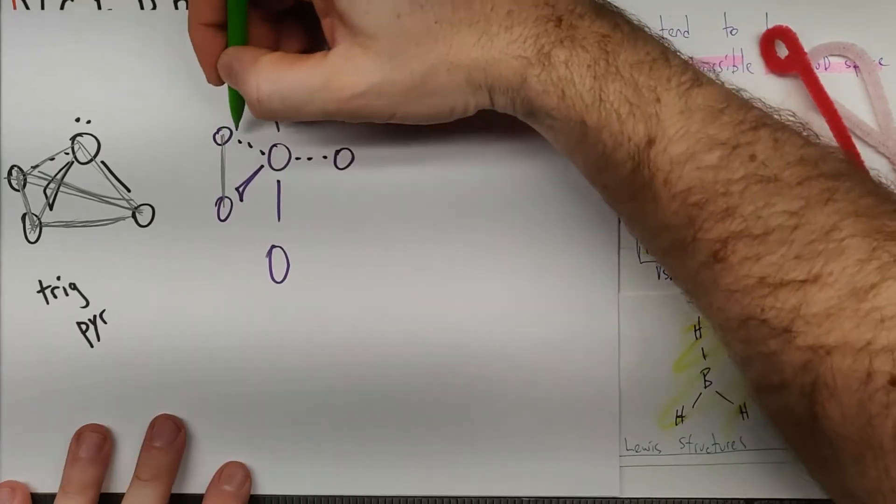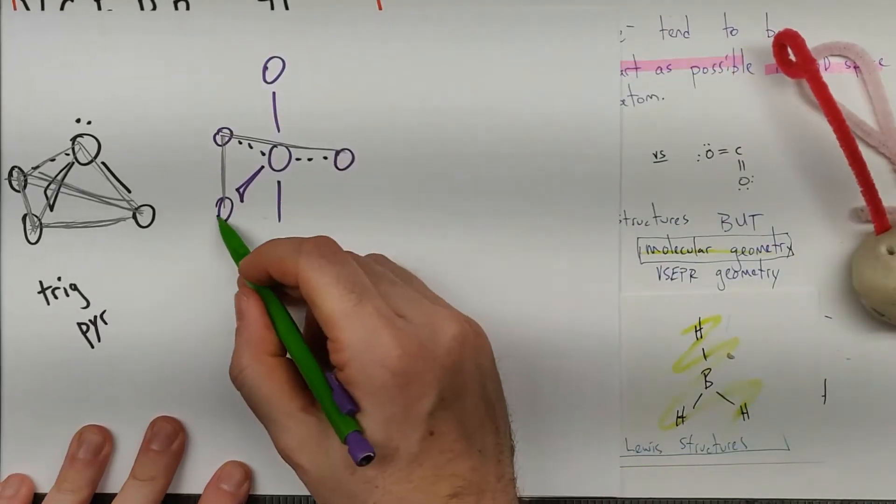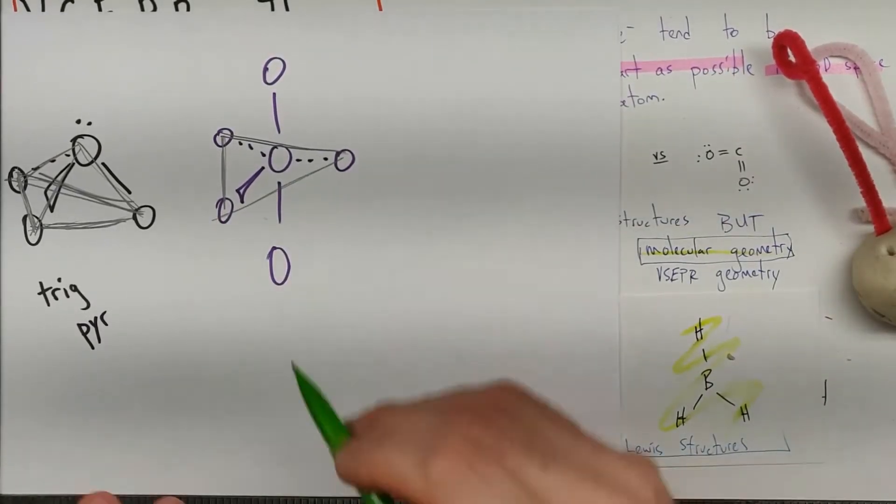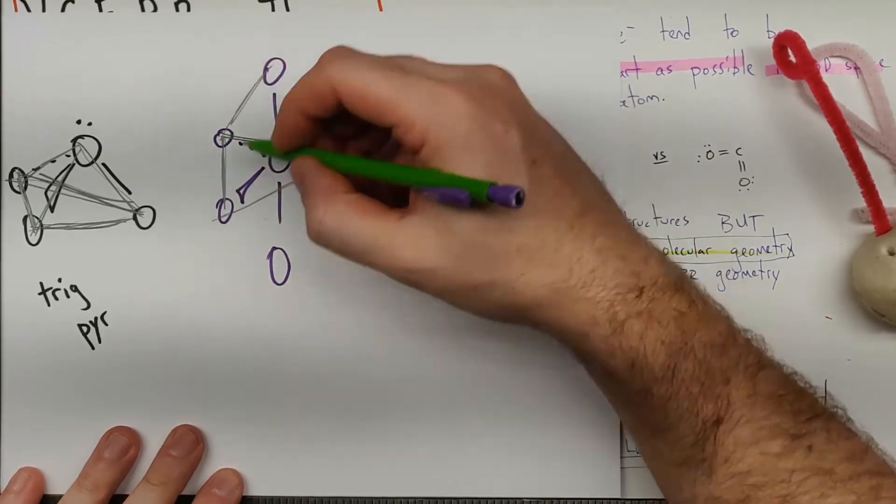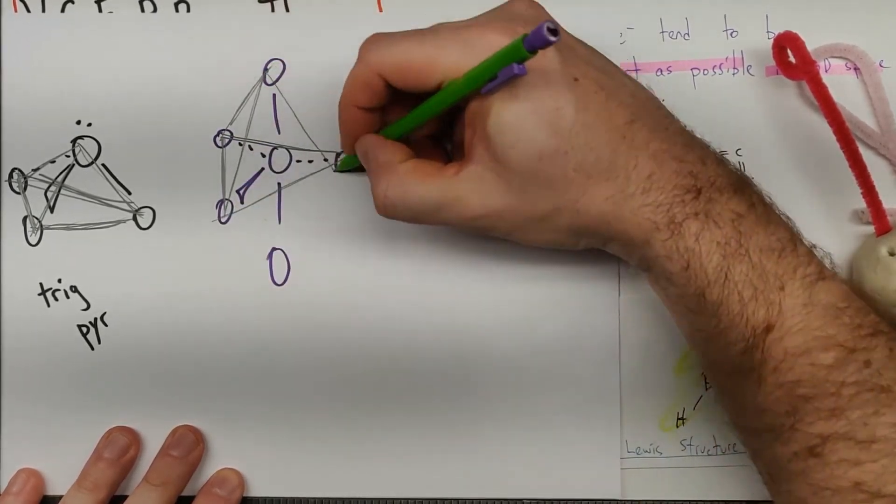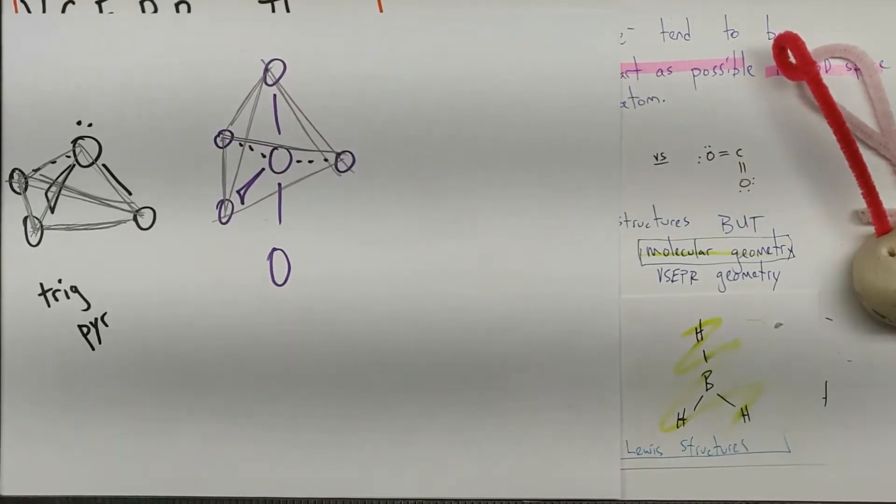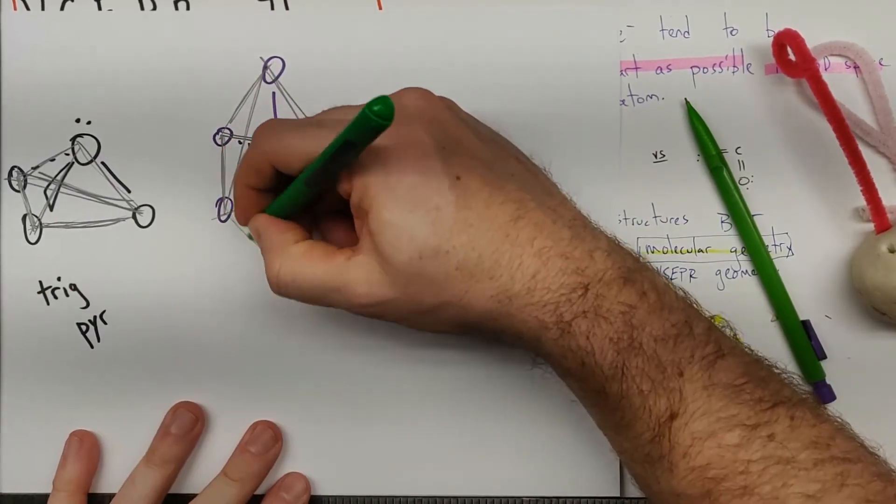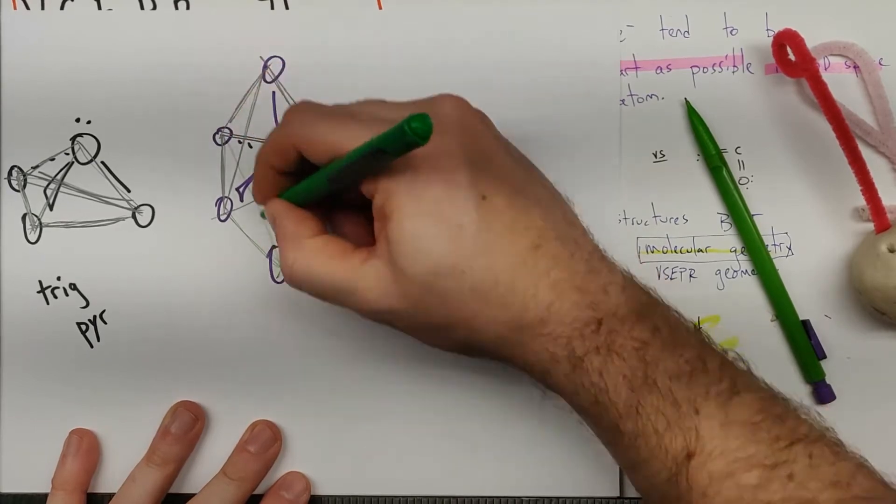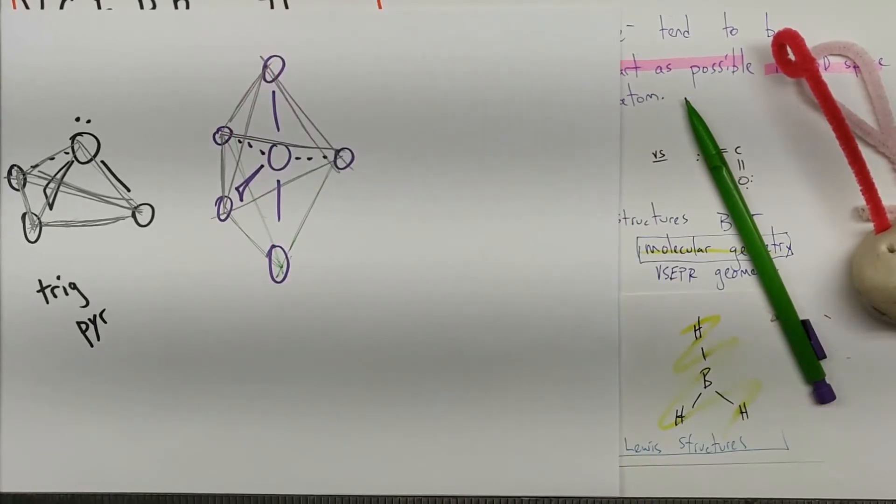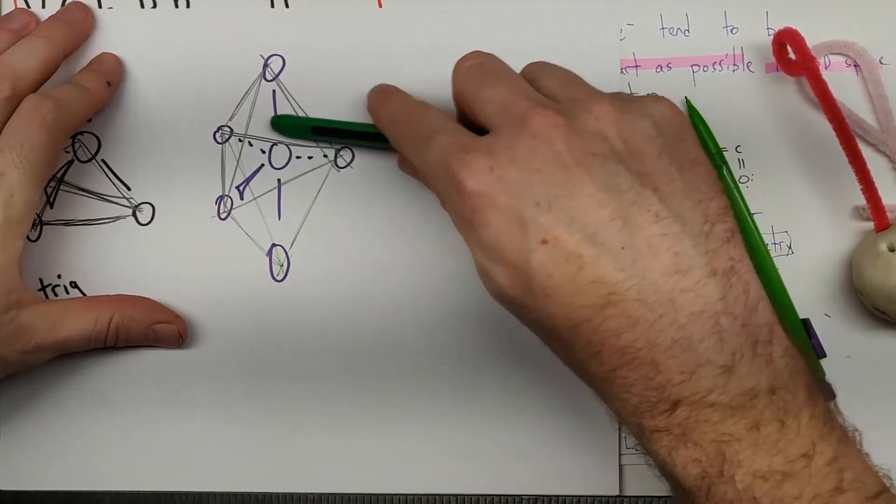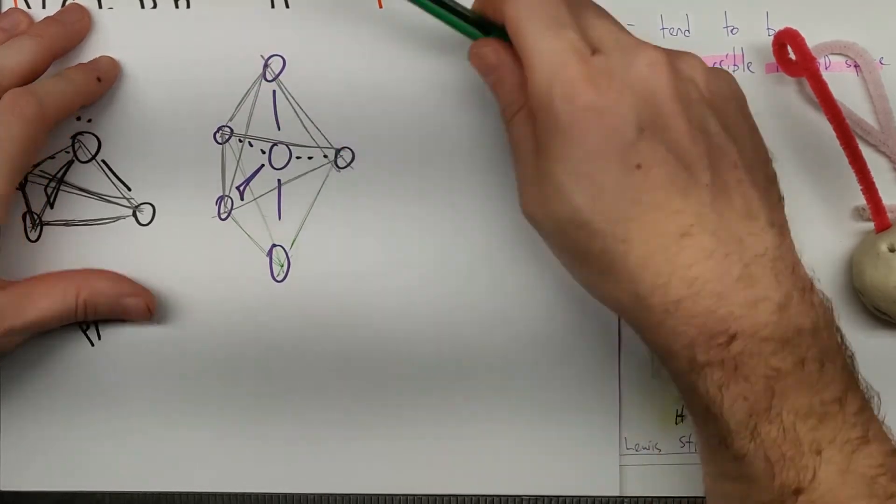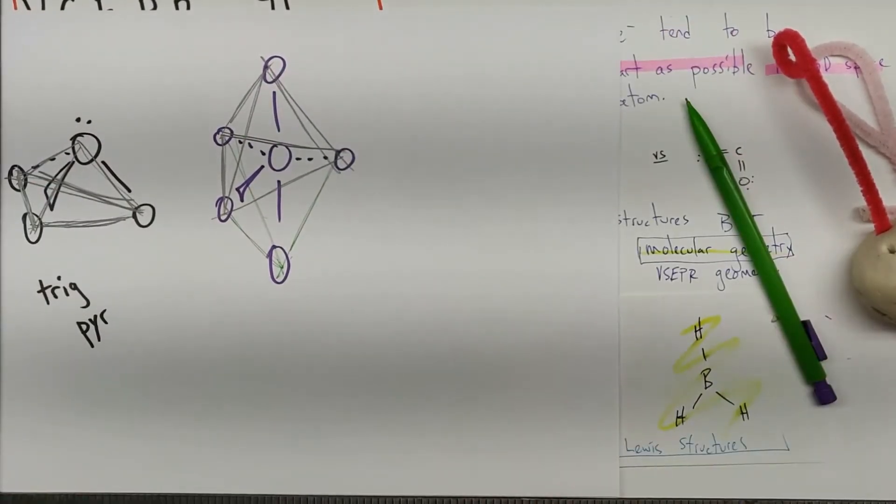And this is a situation where we had trigonal, meaning, once again, three-sided base for our pyramid. But we had one above, and then I'll try and draw this in another color, and one below. So a three-sided base pyramid, one above, one below, is bipyramidal, right? Trigonal.